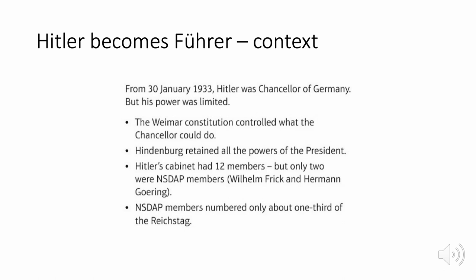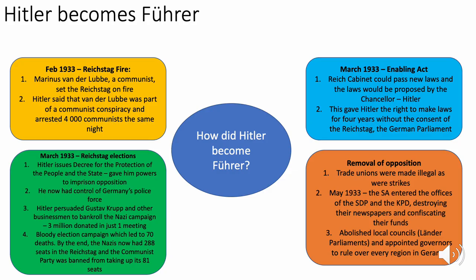From 30th January 1933, Hitler was chancellor of Germany, but his power was initially limited. The Weimar constitution controlled what the chancellor could do, Hindenburg retained all presidential powers, Hitler's cabinet had 12 members with only two Nazi colleagues — Wilhelm Frick and Hermann Göring — and the NSDAP made up only a third of the Reichstag. Hitler was in a weak position and needed to consolidate power through four key steps, plus the Night of the Long Knives.